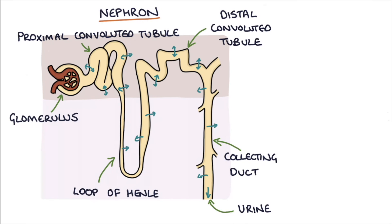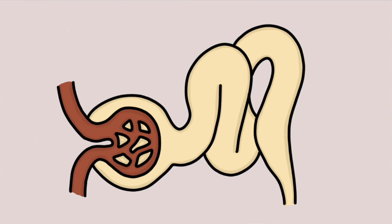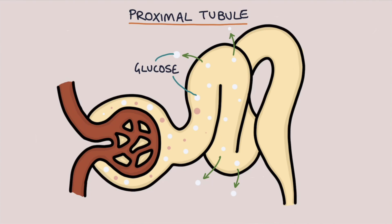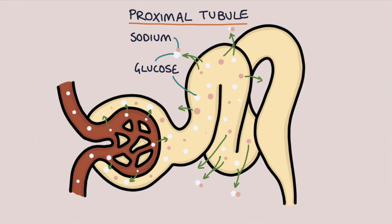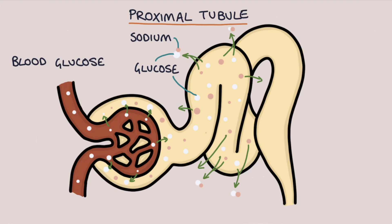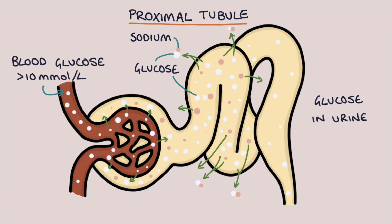For the purpose of understanding SGLT2 inhibitors, we're most interested in the proximal tubule. Glucose is actively reabsorbed in the proximal tubule along with sodium. Normally glucose is filtered passively into the filtrate in the glomerulus, and under normal conditions all of this glucose is reabsorbed in the proximal tubule, so you shouldn't find any glucose in the urine. Where the blood glucose exceeds about 10 millimoles per litre, the proximal tubule doesn't have enough capacity to reabsorb all of it, so you'll start to see glucose appearing in the urine.